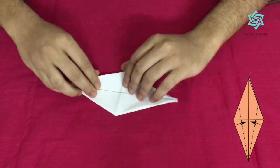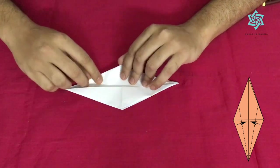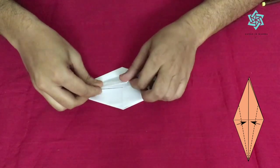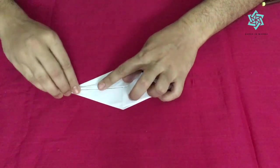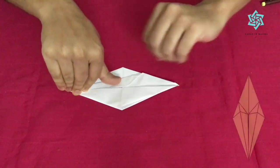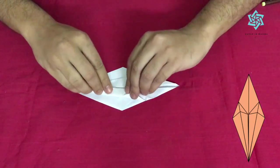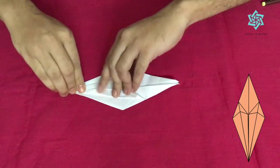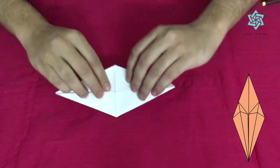But we want to make them more pointed. How do we do that? We take this edge and we again push it on the half line like this. We do this for all the four edges. Turn it around.